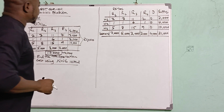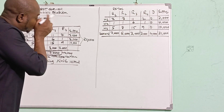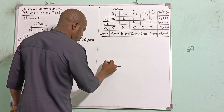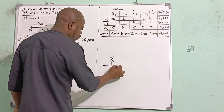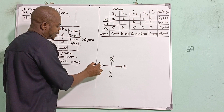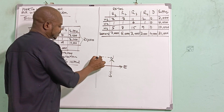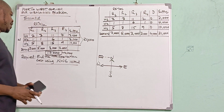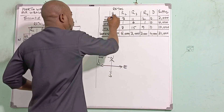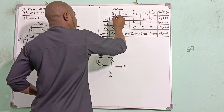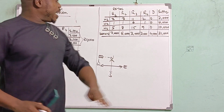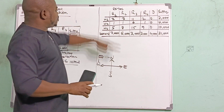Now we can start applying the Northwest Corner method. The compass looks like this: North is up, South is down, East is right, West is left. The Northwest Corner is where West and North meet — the furthest cell to the top-left. In our problem, the Northwest Corner is this top-left cell.